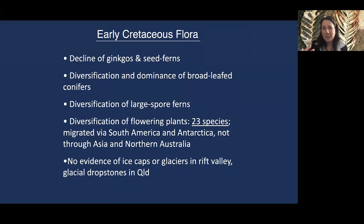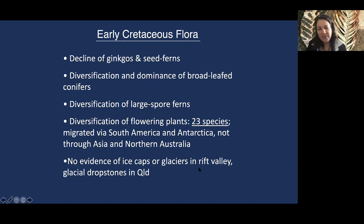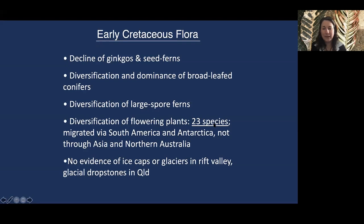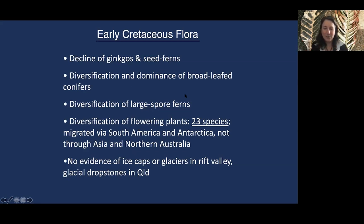To summarise the flora: we've seen the ginkgos and seed ferns and scale-leaf conifers from the Jurassic carrying over into the earliest early Cretaceous. Then we see no evidence of ice caps or glaciers, but glaciers in Queensland help us understand it did get cold for some time. That's when we see the first flowers. Then into the warmer latest part of the early Cretaceous, we're seeing 23 different species of flowering plants coming through South America and Antarctica — quite different to the species in Queensland. And we're seeing broad-leafed, very emergent, tall, large woody conifers dominating the upper story.